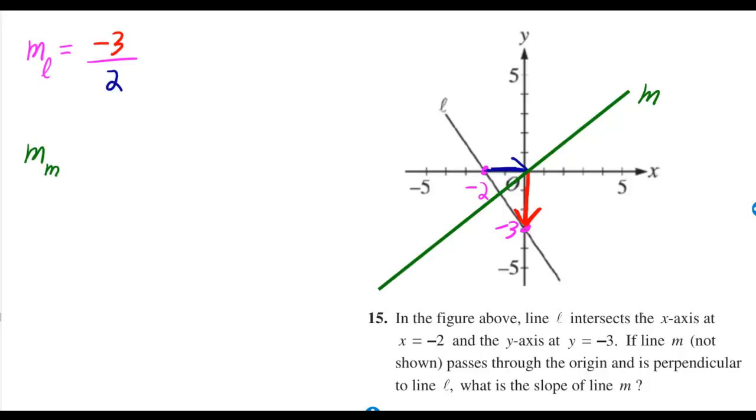Now this is where it gets a little confusing because we're using ML to indicate the slope of L. M is always used for slope. Now we're doing MM to indicate the slope of line M.